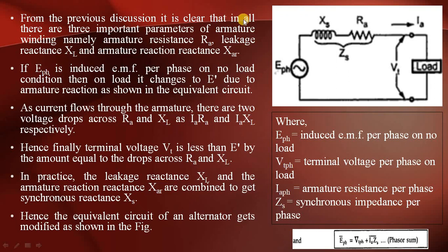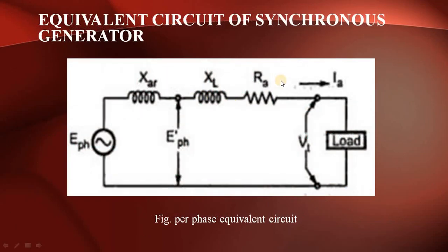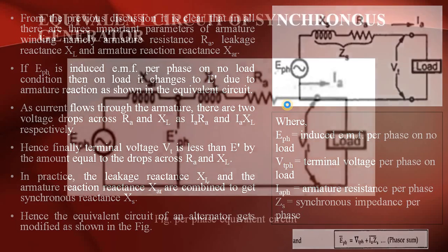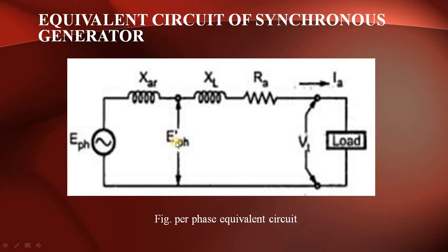From the previous discussion it is clear that there are three important parameters of the armature winding. If E_phase is the induced EMF per phase at no-load condition, then on-load condition it changes to E-dash. E-dash is the induced EMF at no-load and E_phase is the induced EMF at on-load condition.